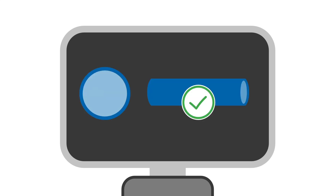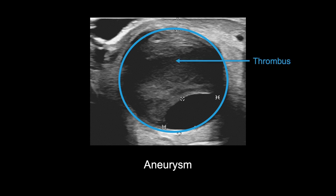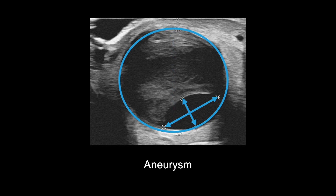On ultrasound, aneurysms are measured in transverse and then confirmed in longitudinal view. They will usually appear circular in transverse view, as seen with the aneurysm in this image. Any thrombus within the aneurysm, such as the one shown here, should be noted as it can expand to block fistula flow. Thrombus also increases the risk of aneurysm rupture. Measure the diameter of the aneurysm vertically; it can also be useful to measure the length and width of the patent part of the vessel, meaning the area not blocked by thrombus.